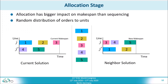After the neighbor solution has been generated, the two solutions are evaluated based on their makespan. Here you can see that the makespan of the neighbor solution is better than the makespan of the current solution, meaning that the current solution will be overwritten. Note that in this stage, no explicit sequencing decisions are made. The sequencing in the neighbor solution is a direct result of the created list of orders.